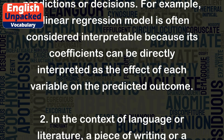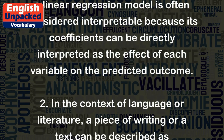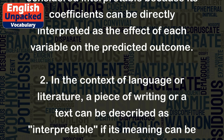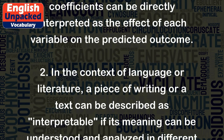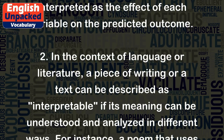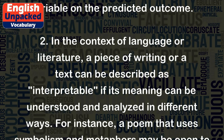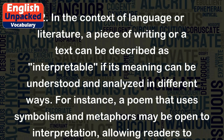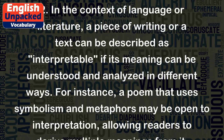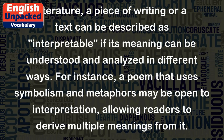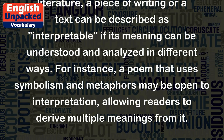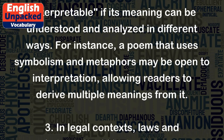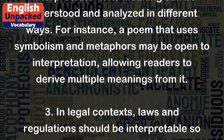In the context of language or literature, a piece of writing or a text can be described as interpretable if its meaning can be understood and analyzed in different ways. For instance, a poem that uses symbolism and metaphors may be open to interpretation, allowing readers to derive multiple meanings from it.